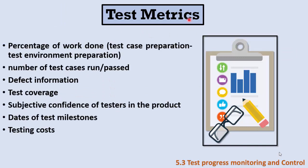After monitoring, we begin to gather metrics. The famous metrics in software testing include: the percentage of work done — how much work is done in test case preparation and test environment preparation; the number of test cases run, how many passed from the whole test case suite; and defect information — how severe are the bugs.